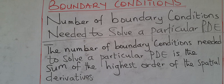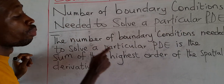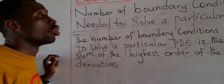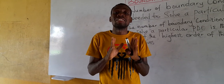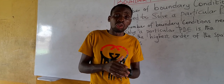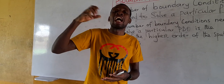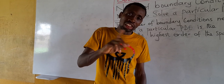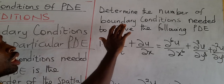Now, how do we determine the number of boundary conditions needed to solve a particular PDE? The number of boundary conditions needed is the sum of the highest orders of the spatial derivatives for each spatial variable. Check the PDE, identify each spatial variable, find the highest-order derivative for each, and add them together.